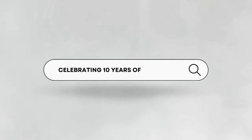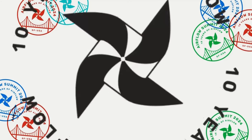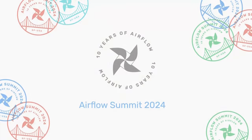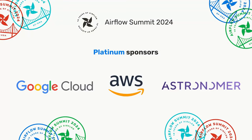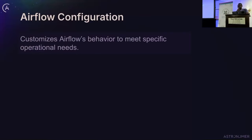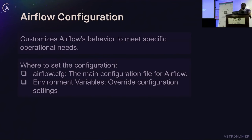I'll be talking about Airflow configuration options for scalability. When you talk about Airflow configuration, it refers to those options that can help you customize Airflow behavior to meet your needs. There are two different places that you can set Airflow configuration: one is in airflow.cfg, and the other is environment variables, which override airflow.cfg.